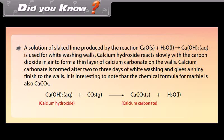Did you know? A solution of slaked lime produced by a reaction is used for whitewashing walls. Calcium hydroxide reacts slowly with carbon dioxide in air to form a thin layer of calcium carbonate on the walls. Calcium carbonate is formed after two to three days of whitewashing and gives a shiny finish. Interestingly, the chemical formula for marble is also CaCO3.